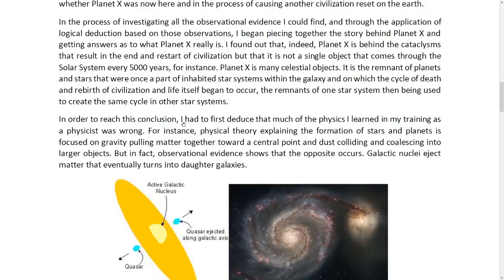Now, in order to reach this conclusion, I had to first deduce that much of the physics I learned in my training as a physicist was wrong. For instance, physical theory explaining the formation of stars and planets is focused on gravity pulling matter together toward the central point, and thus colliding and coalescing into larger objects. But in fact, observational evidence shows that the opposite occurs.